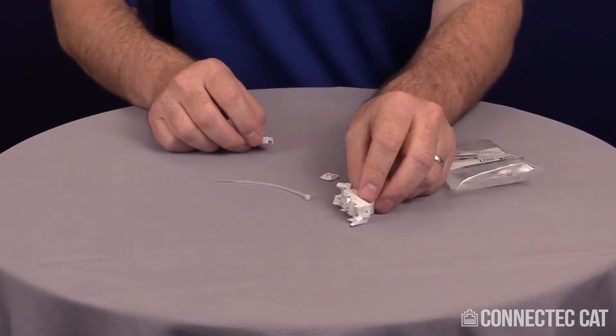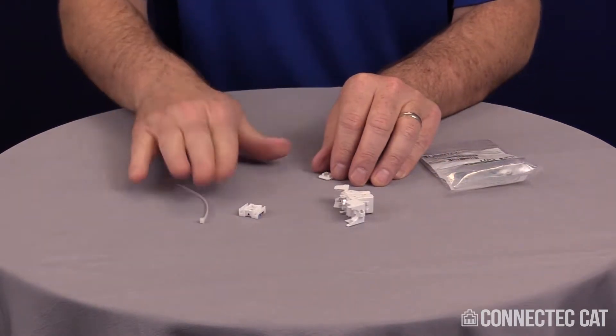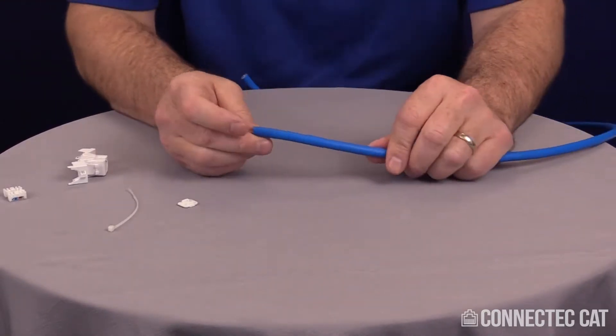Your connector is going to have a connector body, a load bar, a cable tie, and a dust cap. This particular product is for Category 6A unshielded cable.